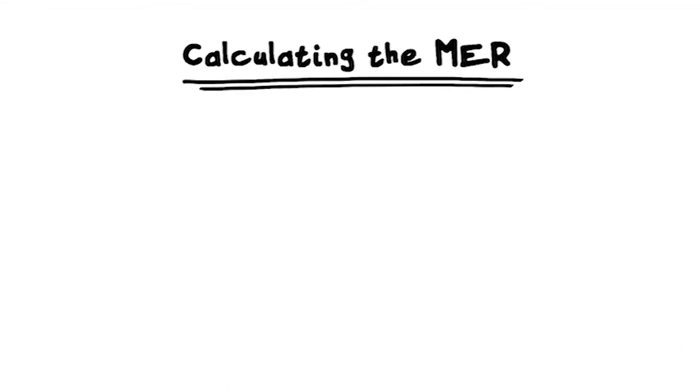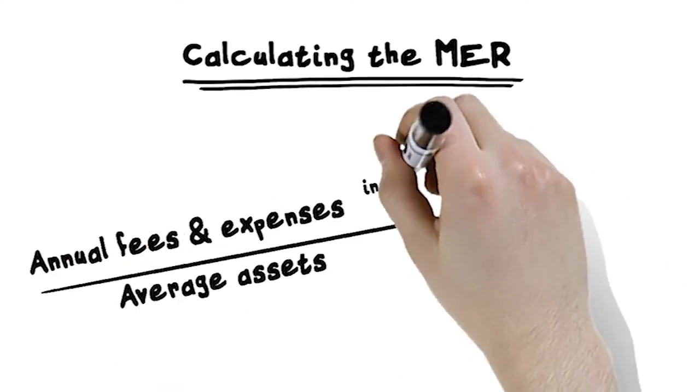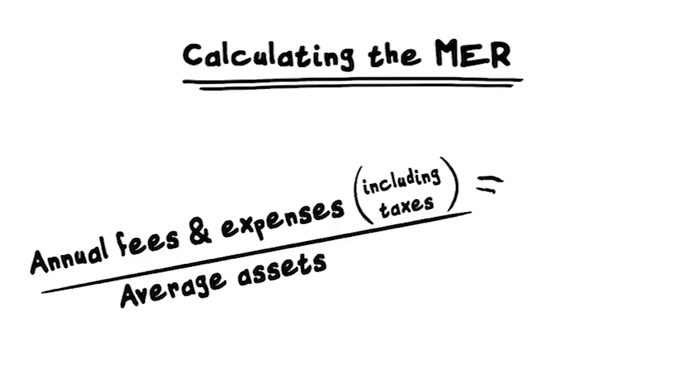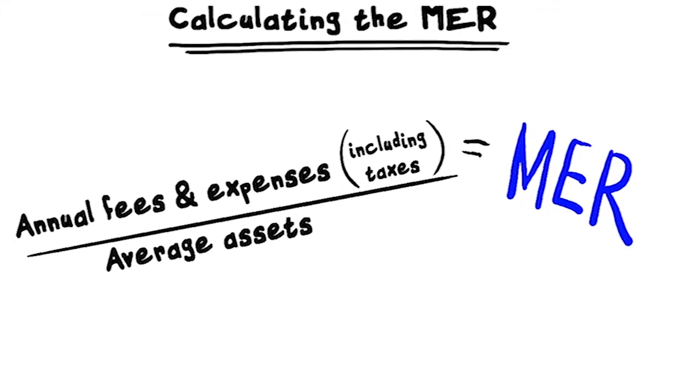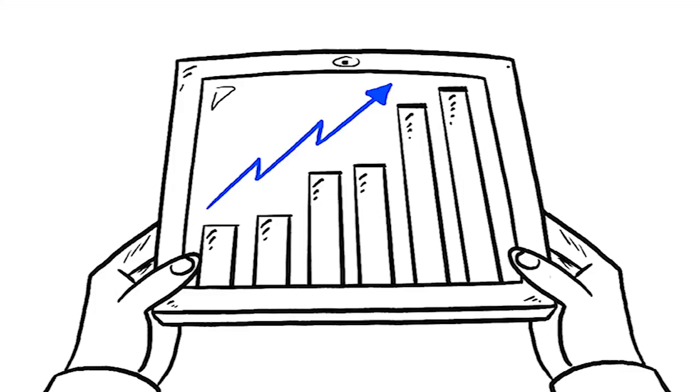The MER represents the percentage of a mutual fund's average net assets paid out each year to cover the costs of managing and operating the fund, including taxes. The returns you earn as an investor reflect performance that is reported after the fund's MER is deducted.